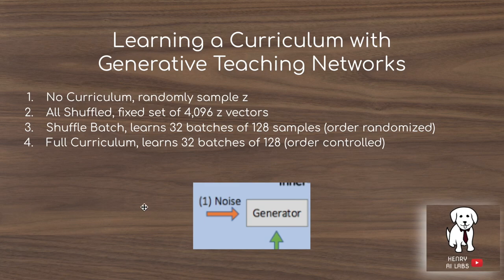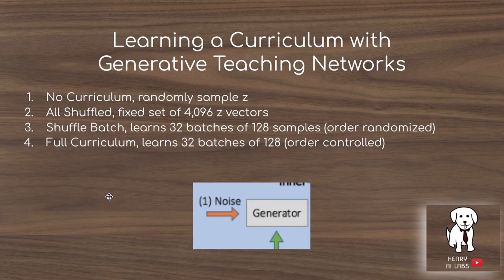They test several curriculum variants: no curriculum, where Z vectors are randomly sampled as a baseline; all shuffled, with a fixed set of Z vectors but no particular ordering; shuffle batch, where they learn 32 batches of 128 samples but the order of batches is still randomized; and full curriculum, which learns 32 batches of 128 images with a structured order in which batches are presented to the classifier.